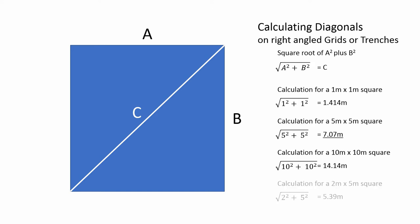You can also do much more complicated ones, such as, let's do a 2 meter by 5 meter square. Well, that's 2 squared plus 5 squared, then do the square root of that, and you end up with 5 meters and 39 centimeters.